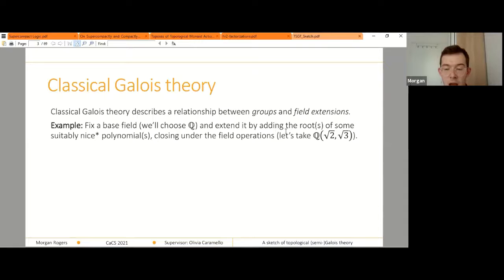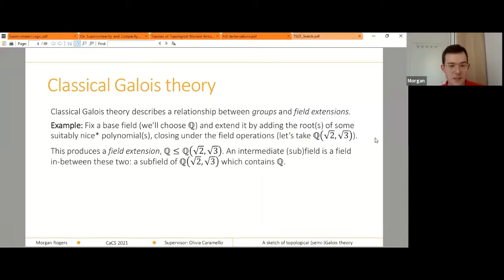So in this instance, I'm going to take the square root of two and square root of three, which are the solutions of the polynomials x squared minus two equals zero and x squared minus three equals zero. So this gives us a field extension, just one field containing another, and we can ask about fields which live in between these two, intermediate subfields.